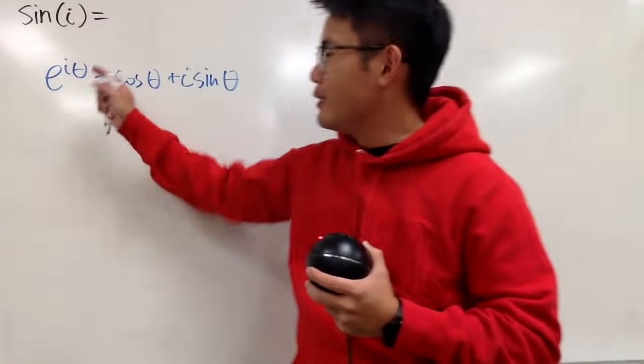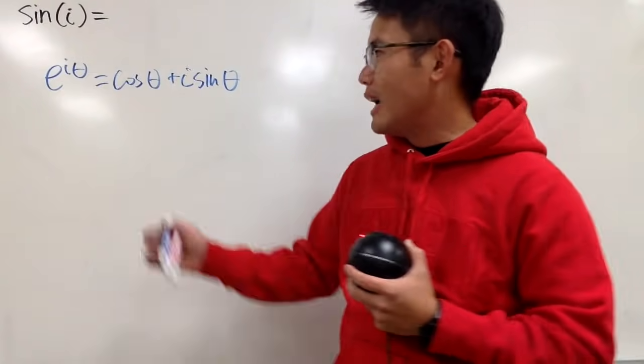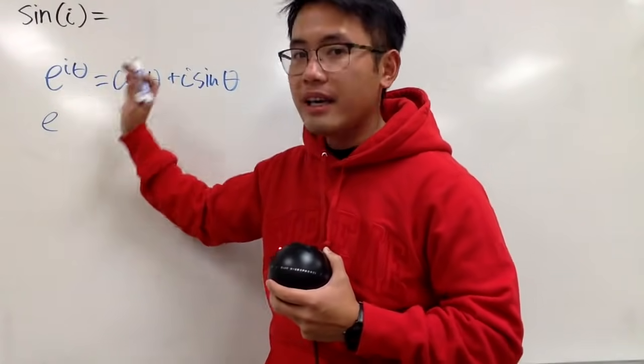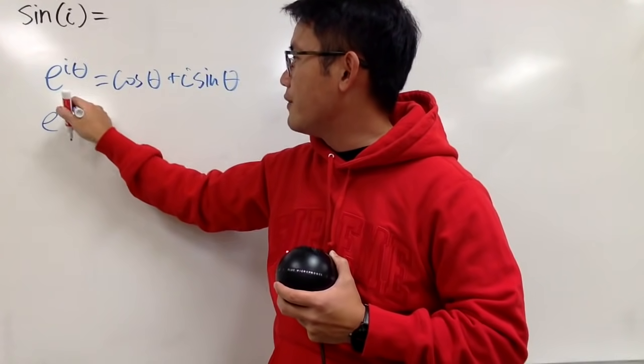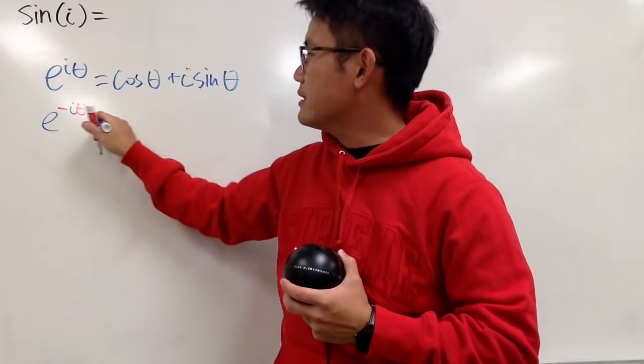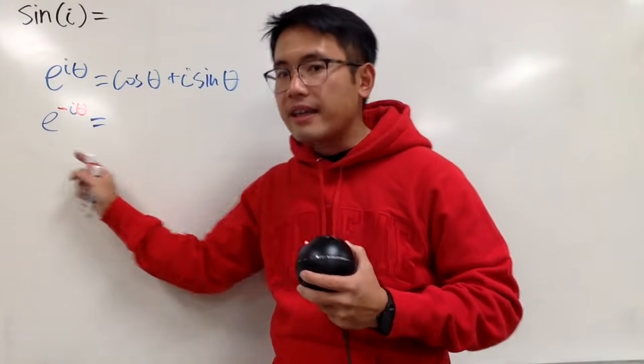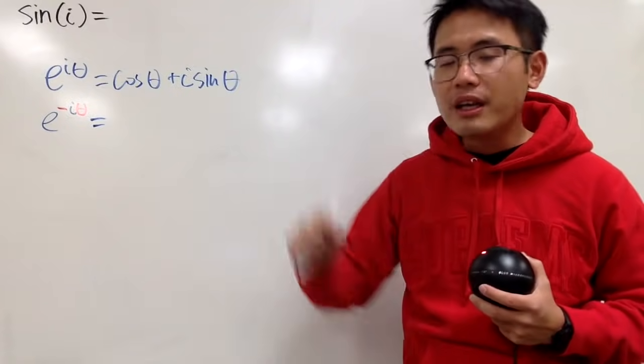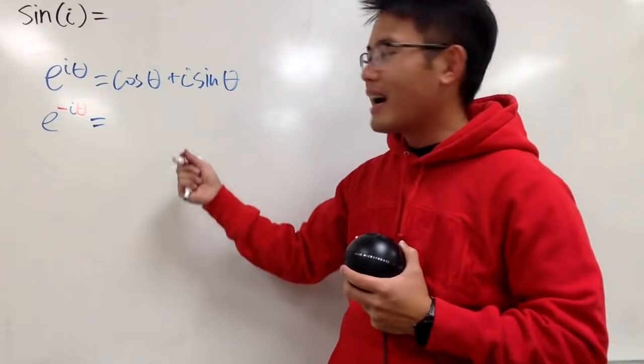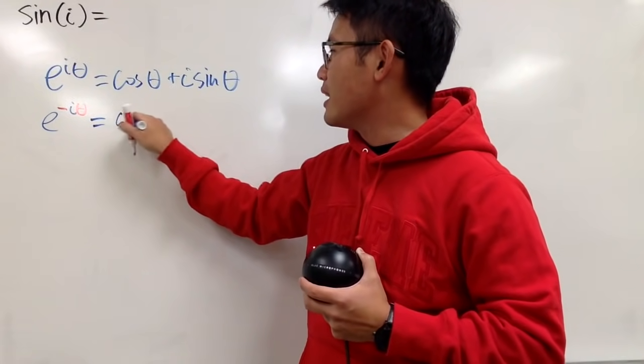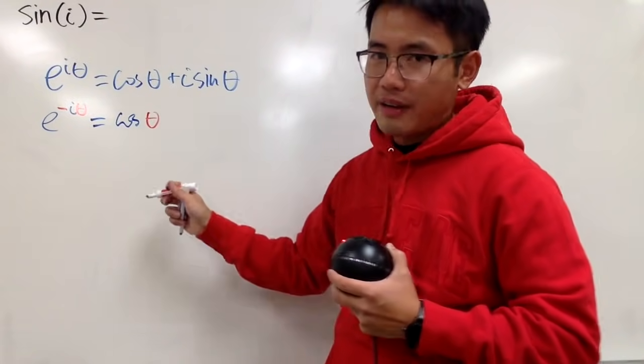Well, you can plug in whatever you want in theta, and I will plug in negative theta into theta here. So it looks like we have e to the negative i theta, like this. And when you plug in negative i theta into cosine, because cosine is an even function, even in the complex world, cosine of negative theta is still the same as cosine of positive theta.